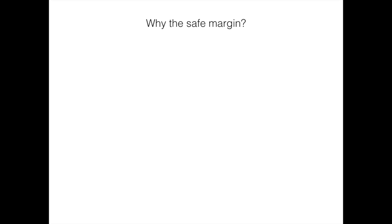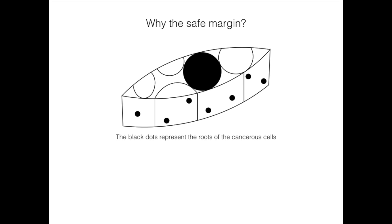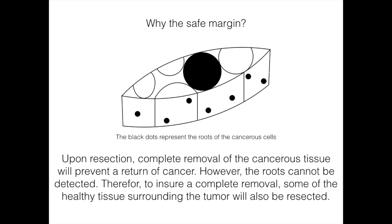In the case of a tumor being present, the safe margin will be assessed before resection. Why the safe margin? Upon resection, complete removal of the cancerous tissue will prevent a return of cancer. However, the cancerous roots cannot be detected. Therefore, to ensure complete removal, some of the healthy tissue surrounding the tumor will also be resected.